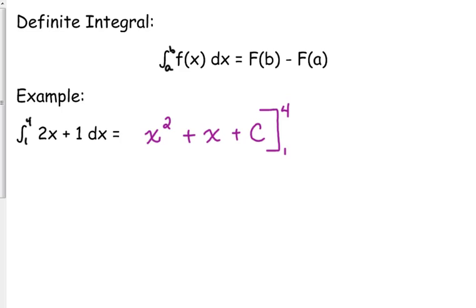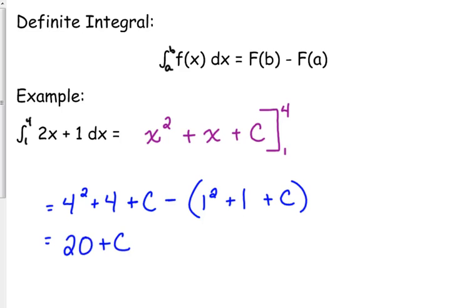Then we're going to plug in our limits. So we plug in 4, 4 squared plus 4 plus C. Now this is where most people mess up. Since we're subtracting, you need to put parentheses. So we've got 16 plus 4 is 20 plus C, and 1 plus 1 is 2. So we've got minus 2 minus C because you distribute that negative.